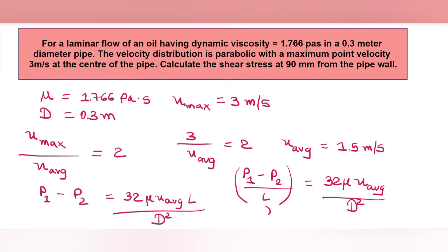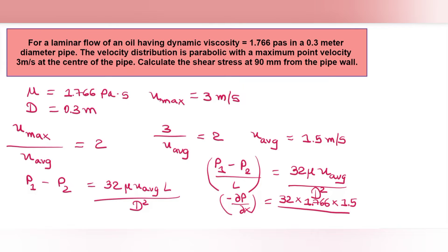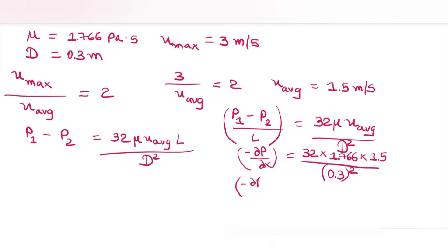Writing this as a pressure gradient: -dp/dx = 32 * mu * u_average / d². Substituting the known values: 32 × 1.766 × 1.5 / (0.3)², we get -dp/dx = 941.87 Pascal per meter.